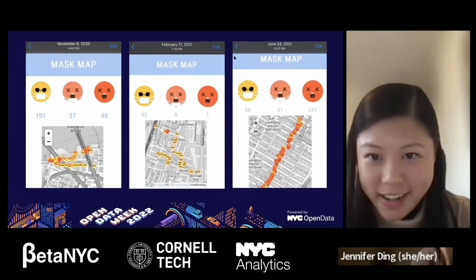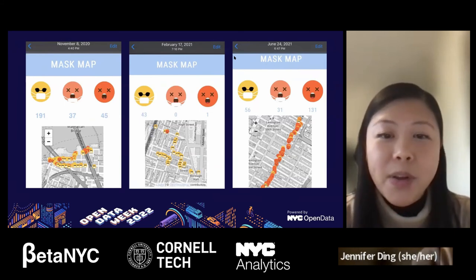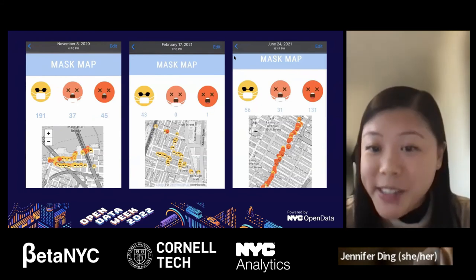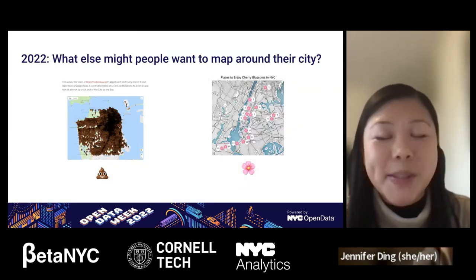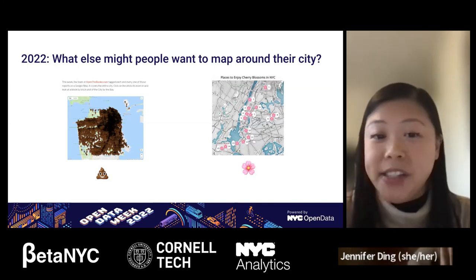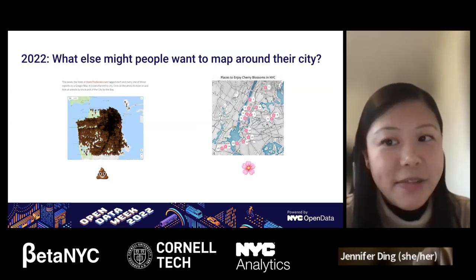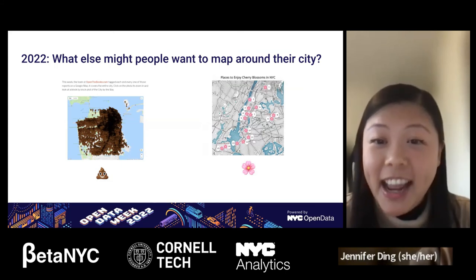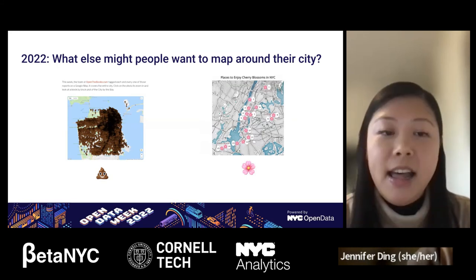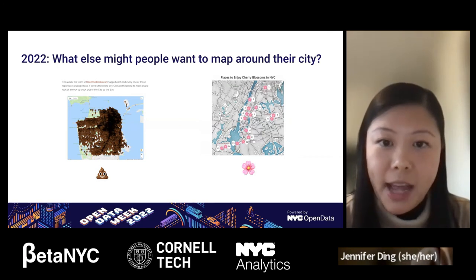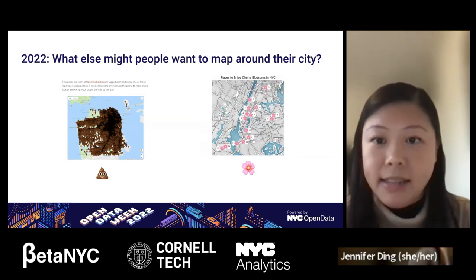This year, Marco and I began to wonder: what else might people want to map around their city? How can we adapt Mask Map to support other citizen science mapping projects? For example, other public health concerns such as trash piles or poop — like the infamous San Francisco poop map that may have been an inspiration for Mask Map. There's also more time-sensitive data like the locations of cherry blossoms in bloom. So we built CityMap so that more people can build their own data maps.